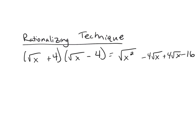If you notice, these two here have opposite signs so they will cancel, and I will be left with square root of x squared, which is x minus 16. When I multiply these two together, I get something in the end that has no square root in it at all.